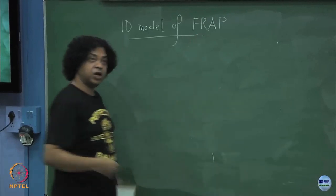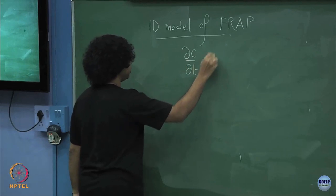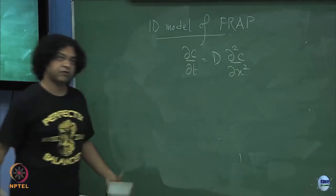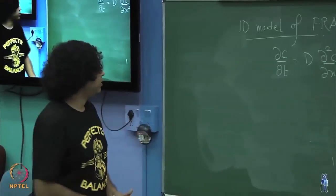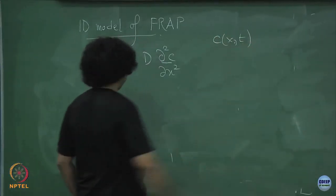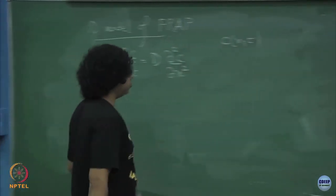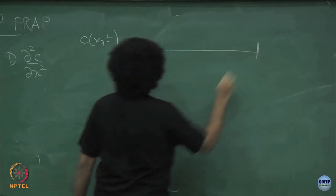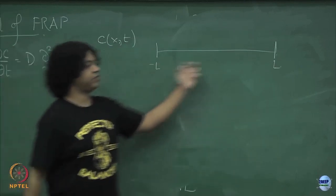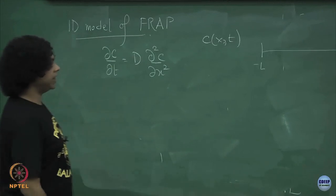My basic assumption is that these molecules are performing diffusion, which means that the motion is going to be described by the diffusion equation, and it is 1D. So I write this: concentration c is a function of x and t. Let me take a domain like this — this is my cell, it goes from minus l to plus l. So the cell is of length 2l; this is my hypothetical, completely purely 1D cell.